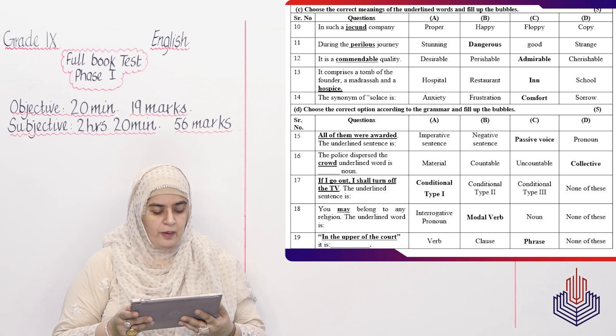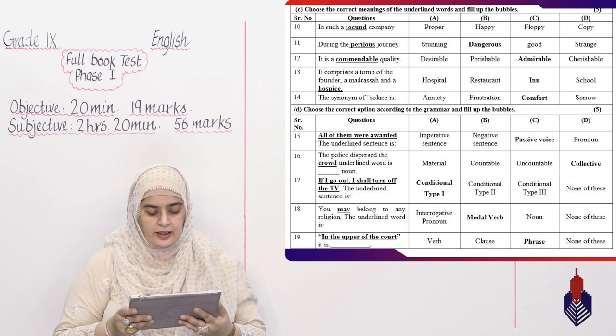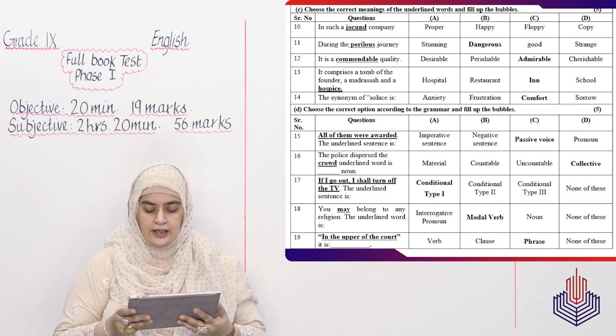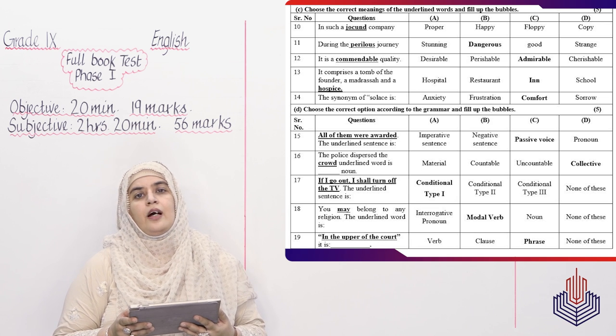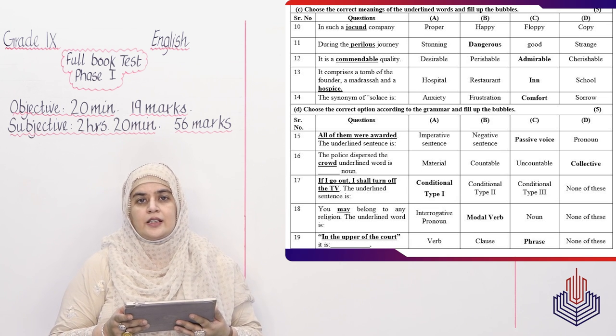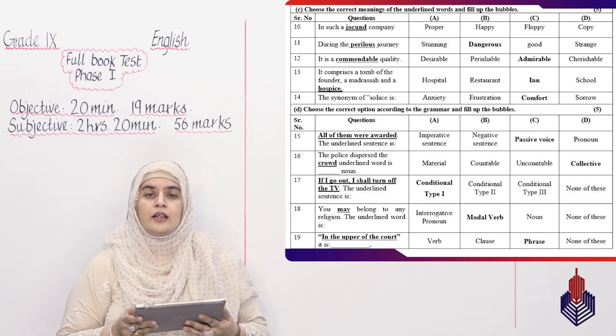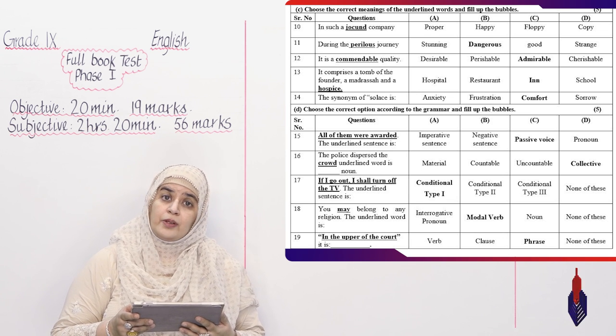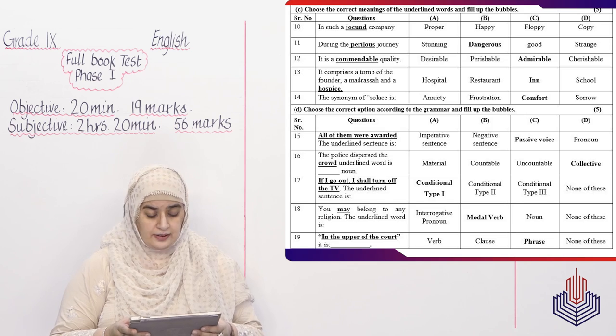Next is: in the upper part of the fort. Aur ye kya hai? Aapka verb hai, clause hai, phrase hai ya none of these. Toh beta hameh pata hai ke ye group of words hai without complete sentence. Isse ye phrase hai, incomplete. Iske subject or verb agreement nahi hai. Your option number C, phrase is the right answer.